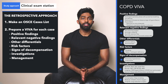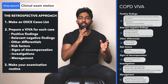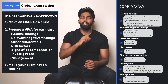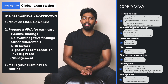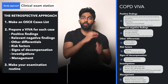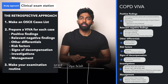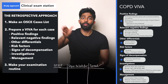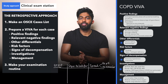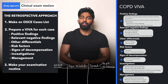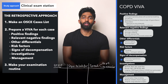Step three of the retrospective approach is where you make your examination routine. This seems very back to front, but using all the information from those solid vivas, you can work out which positive signs correlate to which differential. The way I did it was to prepare a table with three columns: on the left, which step of the routine it is; in the middle, all the signs I'm looking for and what they represent; and on the far right, my speech — what I'm actually saying, balancing talking to the patient with narrating findings like noting no tar staining as a relevant negative for COPD.